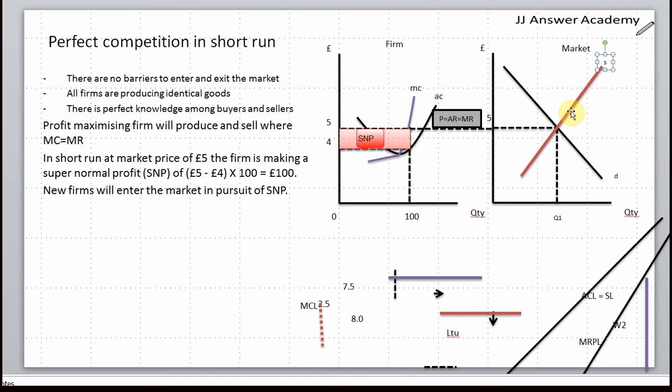When new sellers enter the market, what will happen to the supply curve? It will shift to the right because there are new firms entering the market. New firms enter the market, shifts the supply curve to the right.